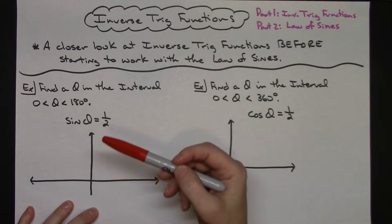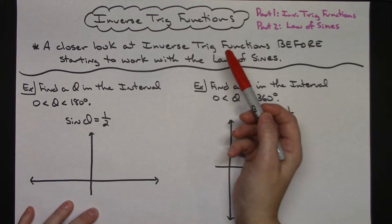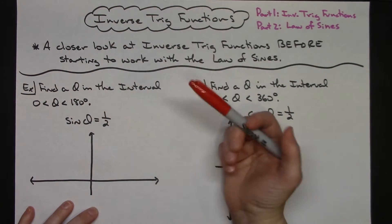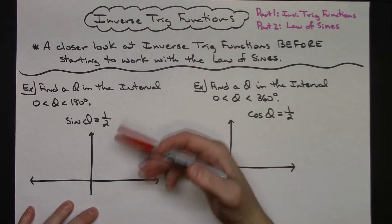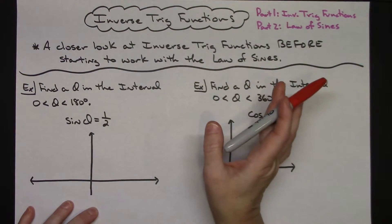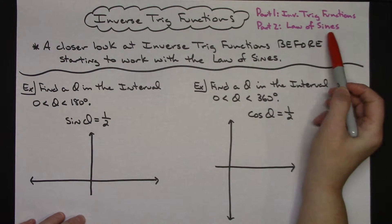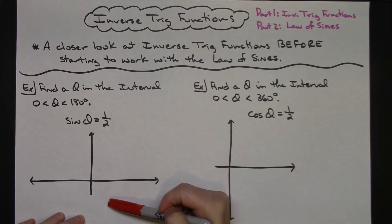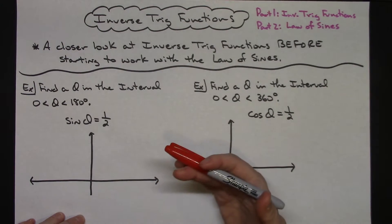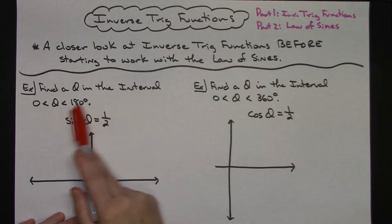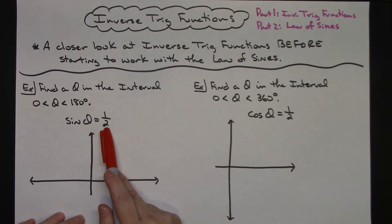Often when students are trying to find inverse trig functions, the first thing they do is grab their calculator, plug it in, and whatever value they get they assume that's the only answer. That will possibly create problems when working with the law of sines. In this first example, let's say you need to find theta in the interval from 0 to 180 degrees where sine theta equals one half.